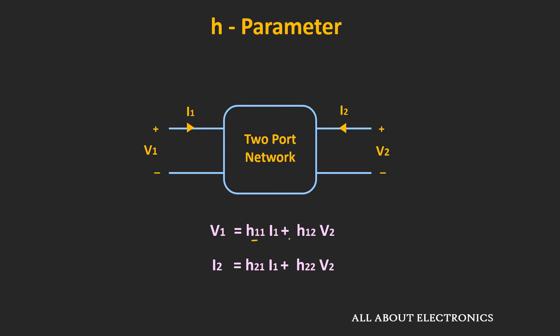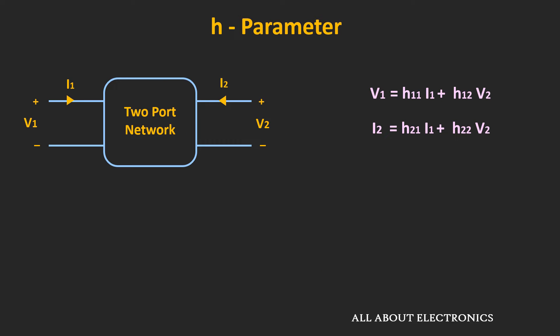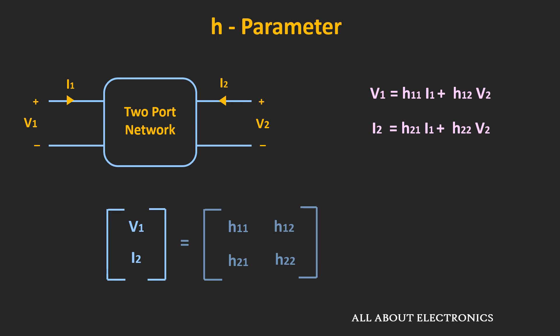Where h11, h12, h21, and h22 are the proportionality coefficients and they are known as the H parameters. These two expressions can also be written in matrix form — v1 and i2 equal the matrix of H parameters times i1 and v2.